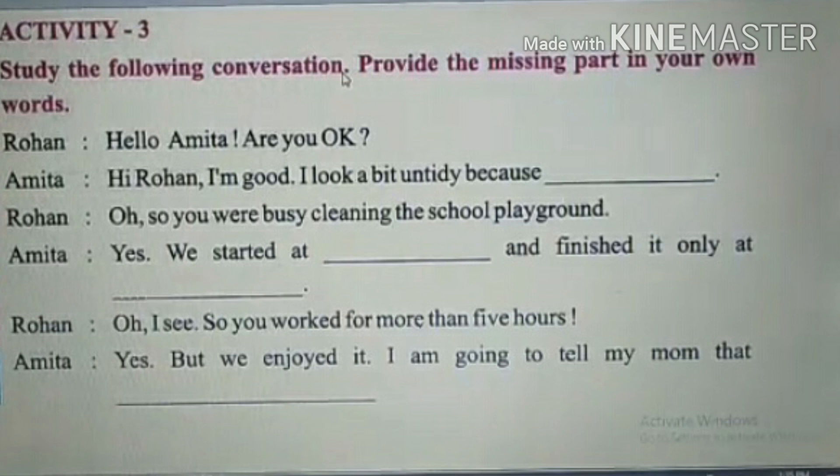First you have to see Rohan's question, then answer in Amita's words. Rohan says: 'Hello Amita, are you ok?' Then what answer is given by Amita? Amita says: 'Hi Rohan, I am good. I look a bit untidy because...' — now there is a blank. See the down part in Rohan's conversation and try to answer the upper blank.